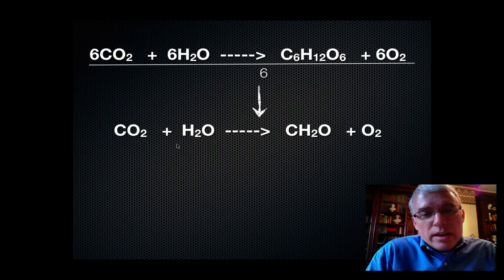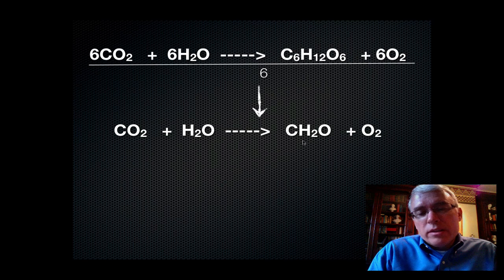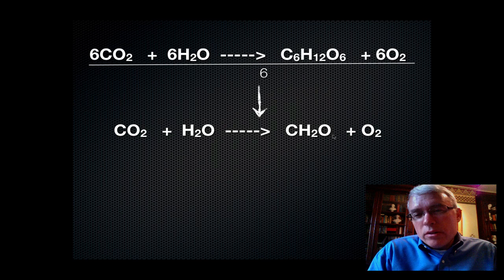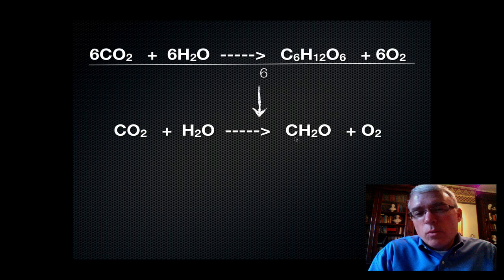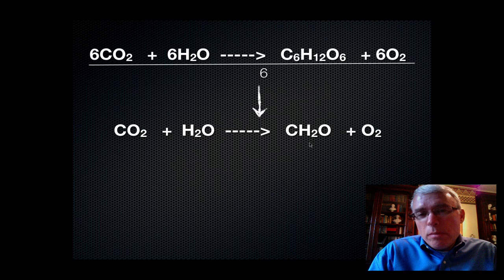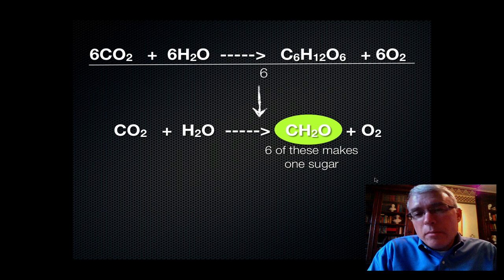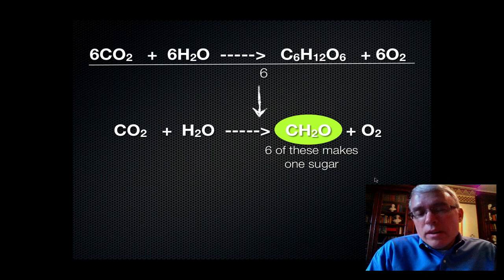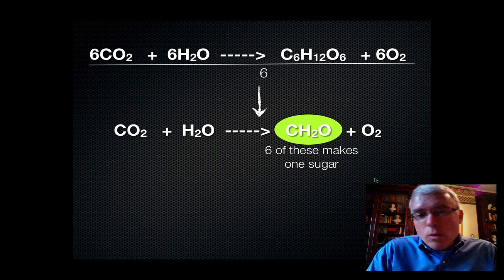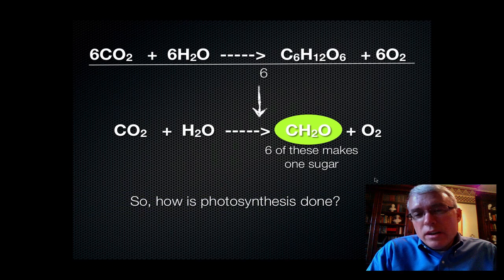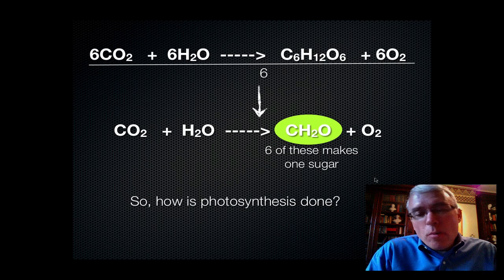One carbon dioxide plus one water molecule is going to give us a CH2O molecule and oxygen gas. Now this is a simple subunit of all carbohydrates: one carbon, one oxygen, and two hydrogens. That has all the proportionality of carbohydrate subunits. And if you take six of these and combine them, you can build a sugar like C6H12O6. This makes it a little simpler to follow what we're going to do next.